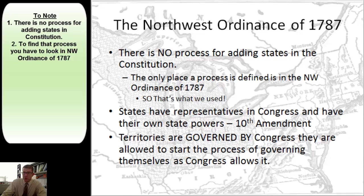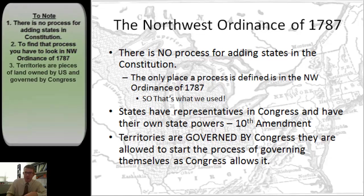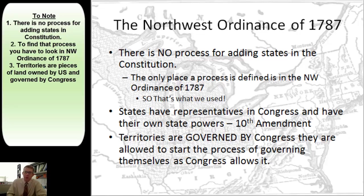What we do know in the Constitution is that states have representatives in Congress and they have their own state powers, like we've talked about in the Tenth Amendment. Territories are pieces of land that the United States owns and possesses, but they're not states — so they don't have those Tenth Amendment rights. Territories are governed by Congress. They are allowed to start a process of governing themselves, but only as Congress allows it. Congress gets to say how much the territory can do and allows the territory to go through a process to become a state.